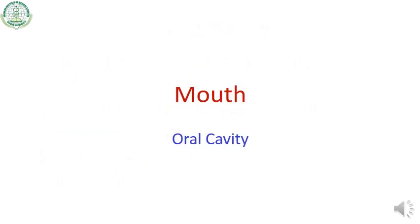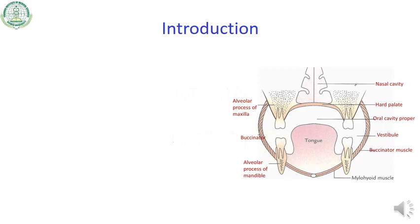Before going to the soft palate, you should know a little bit about the oral cavity, which we usually call the mouth or the mouth cavity. The oral cavity is divided into an outer smaller portion — you can see here, this is the outer smaller portion, the vestibule of the mouth. Here also you can see the vestibule of the oral cavity, and the remaining inner larger portion is called the oral cavity proper.